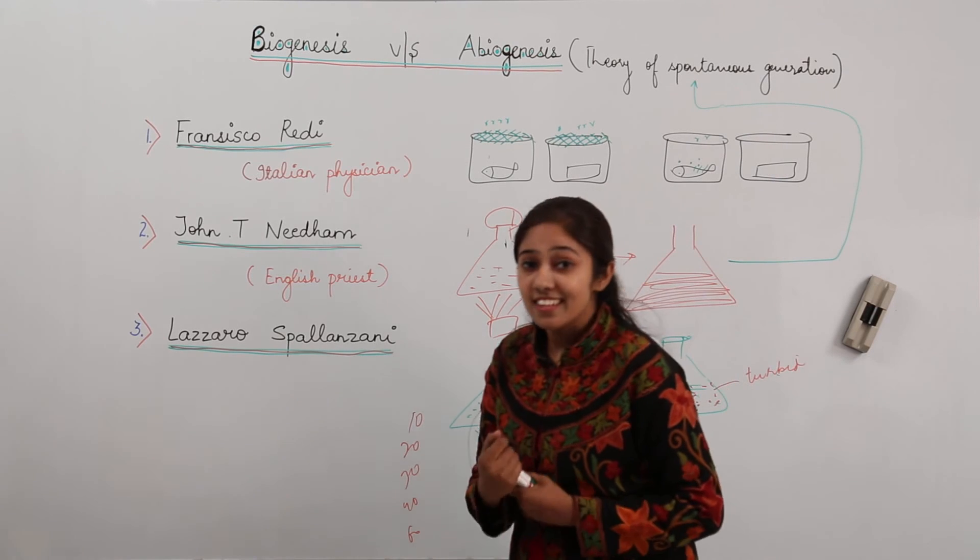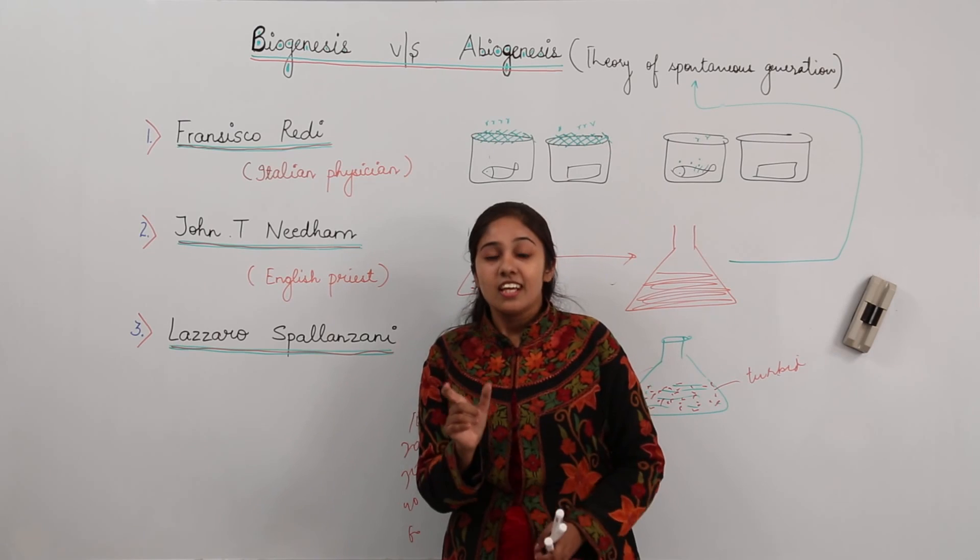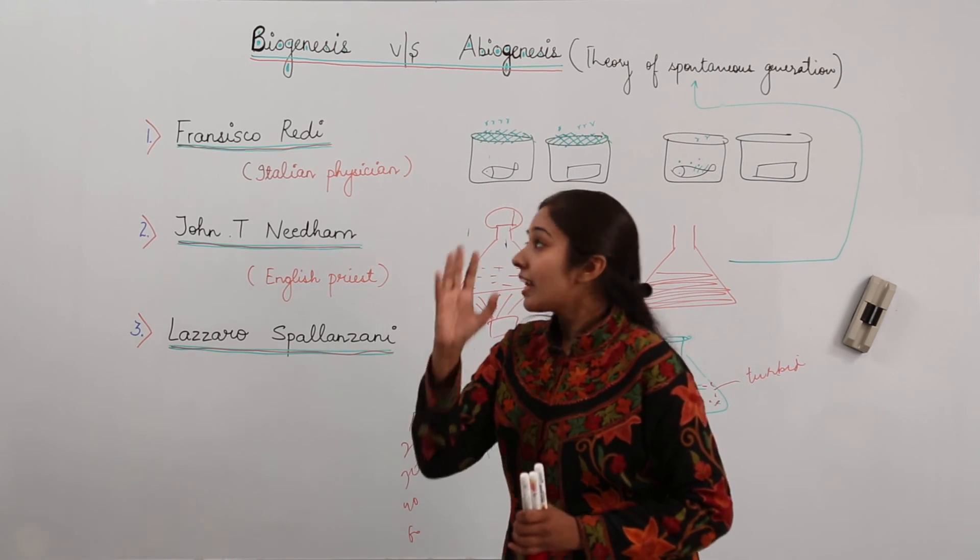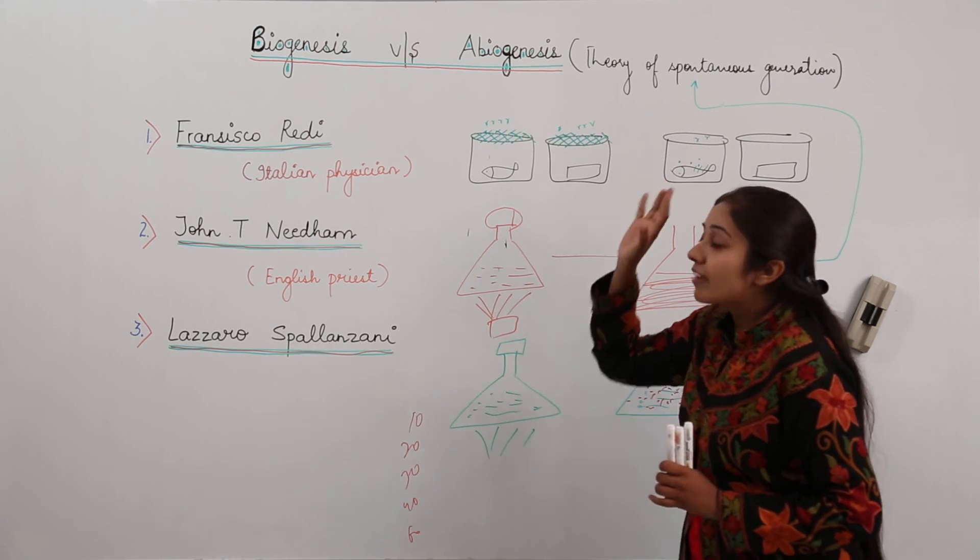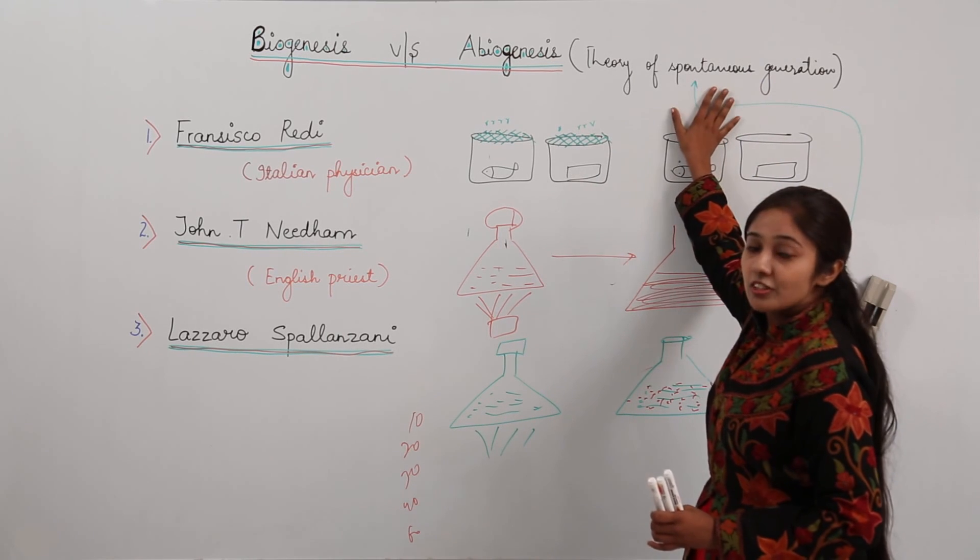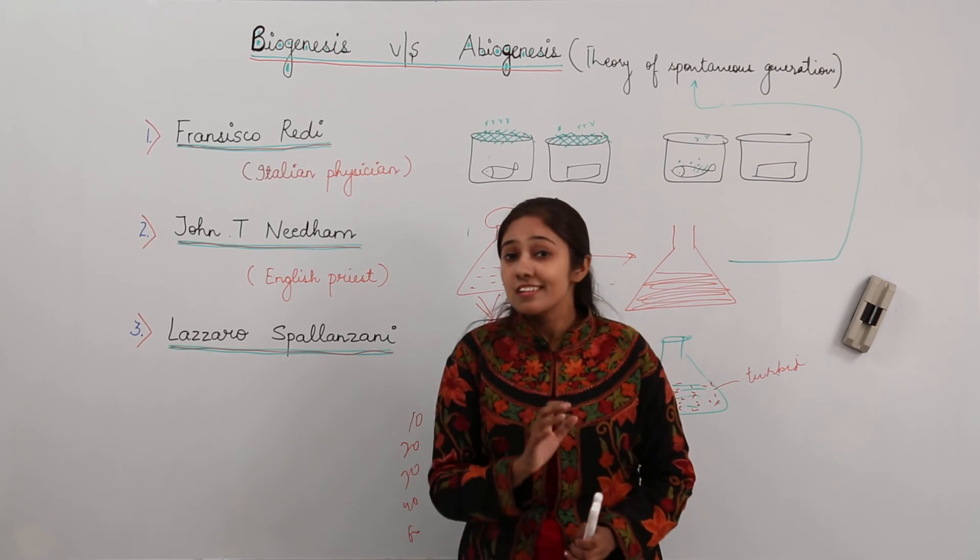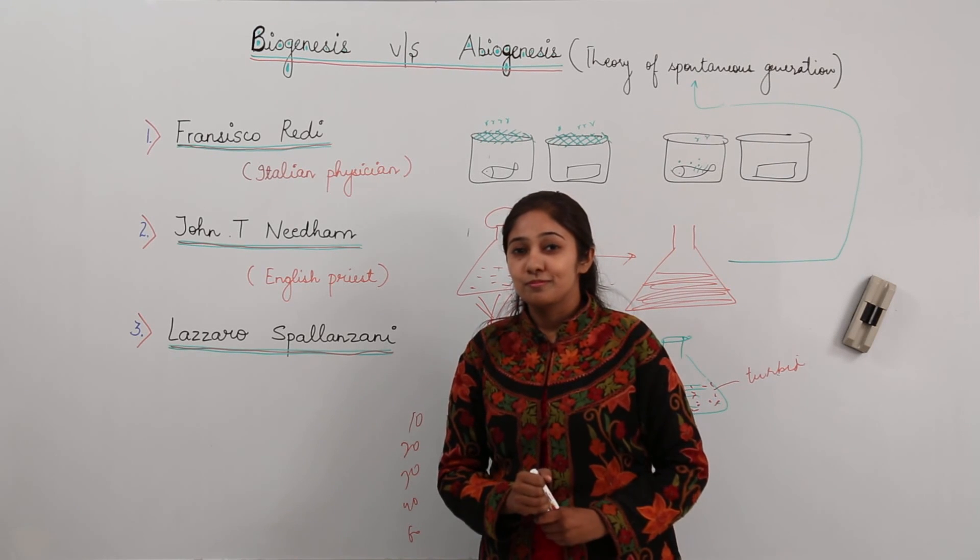But one great scientist whom you all know very well, that is Louis Pasteur, was a well-known, renowned scientist at that time. He finally gave an end to the theory of spontaneous generation by his important experiment that we are going to discuss now.